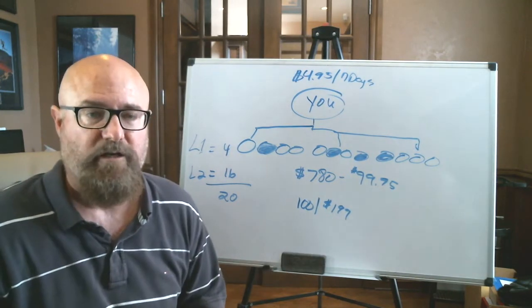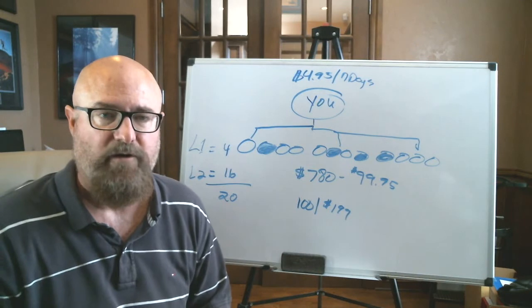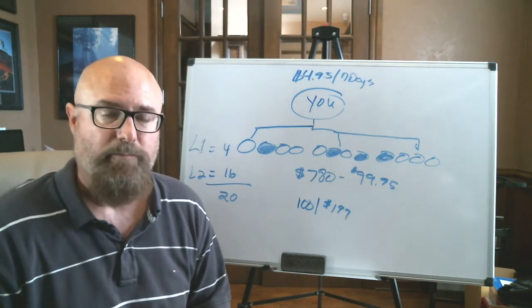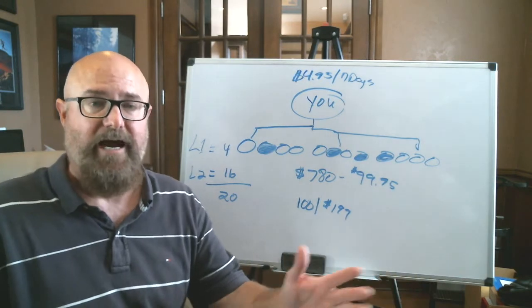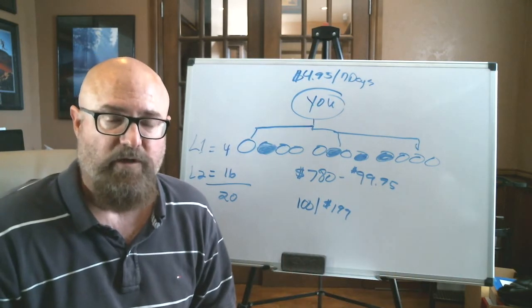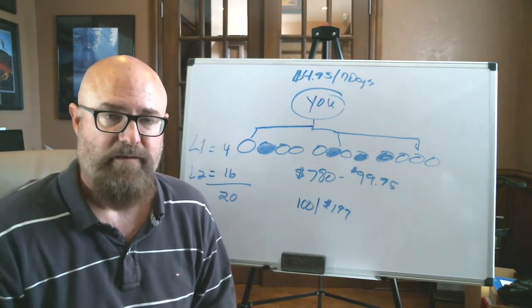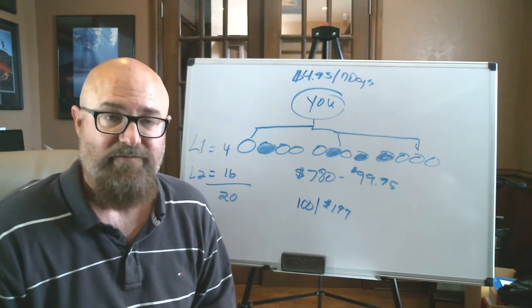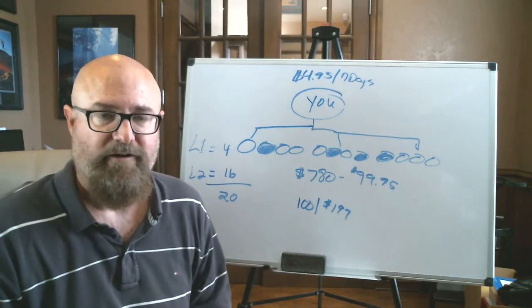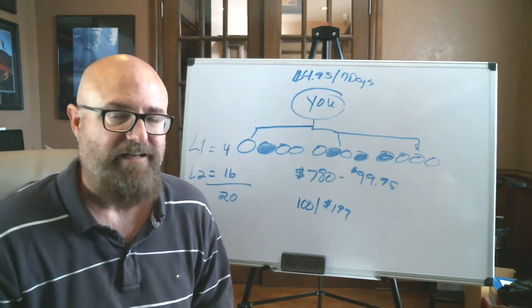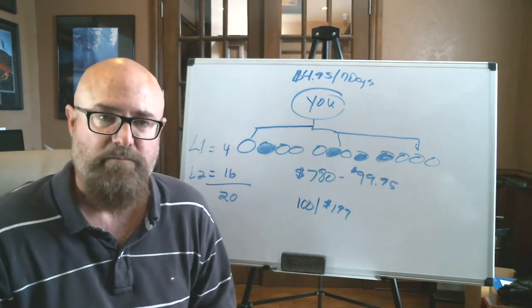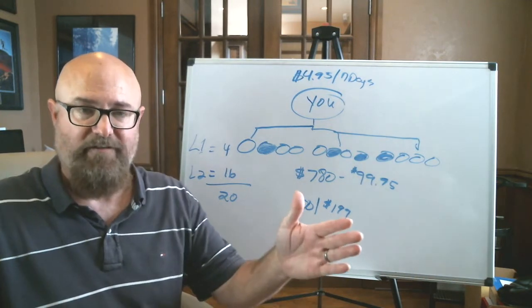In our program, we get paid a $300 commission when we bring somebody in on our $500 program. And right now we're putting in an average of five people out of every hundred over about a 90 day period. So for every hundred leads that we contact and we work them, we're making $1,500 and our lead cost is $200. So we're netting $1,300 off of that. It doesn't happen the first day, it doesn't happen the first week, it doesn't happen the first month, but it's over a period of time.